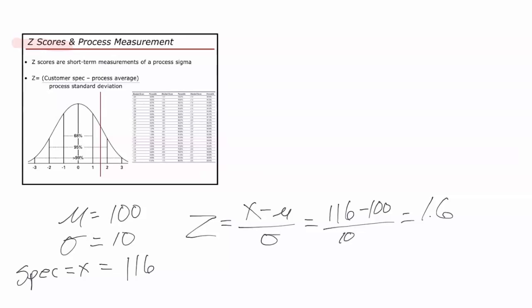You need to understand central tendency, the mean, you need to understand variation, sigma, and you have to have a specification limit that's a spec limit satisfying customer needs. Using the z-score formula you can then calculate a z-score value which is a representation of performance in the system. We sometimes call them sigma levels of performance.